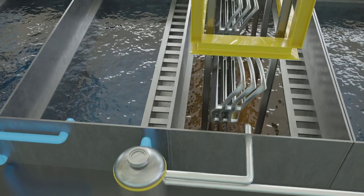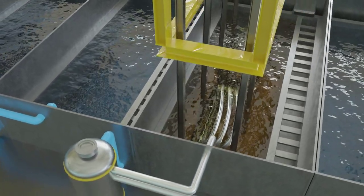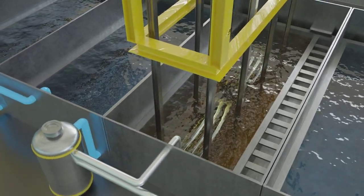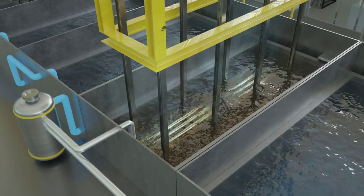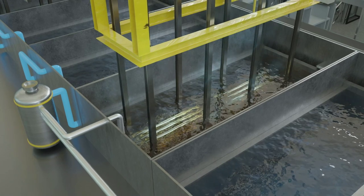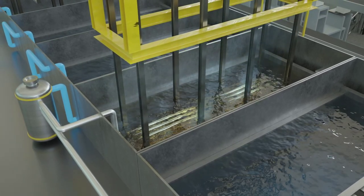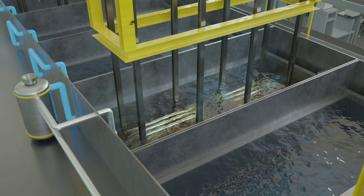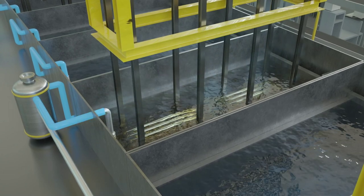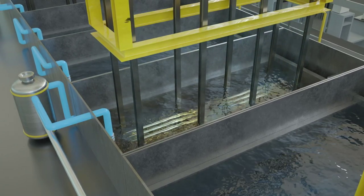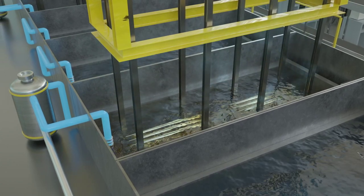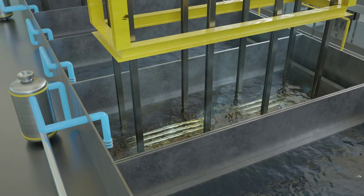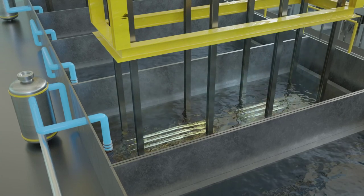Directly in front of this rinsing cascade is the degreasing bath, in which the components are actually cleaned using chemicals and ultrasound. Water is lost here due to evaporation and drag-out losses. The buffer storage tank compensates for this with the aid of the rinsing water. This contains the surfactants washed off in the cascade from the degreasing bath. They are immediately recycled here.